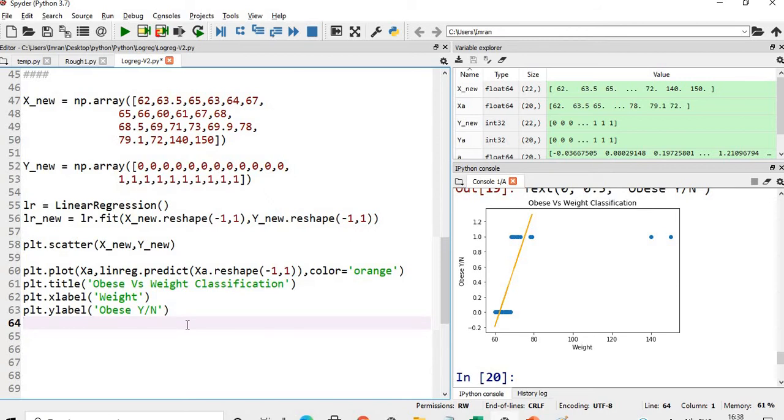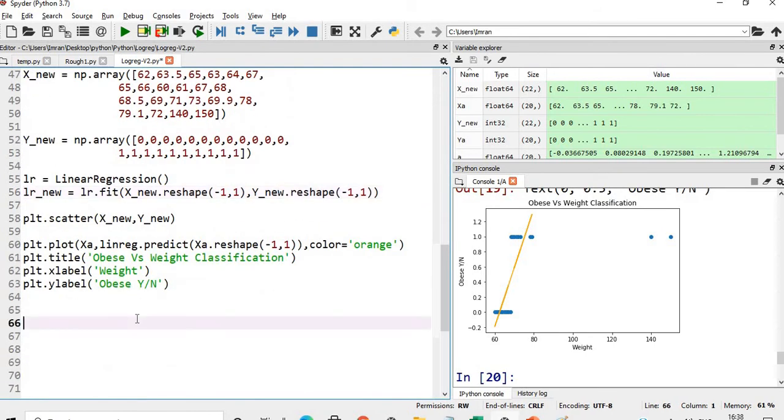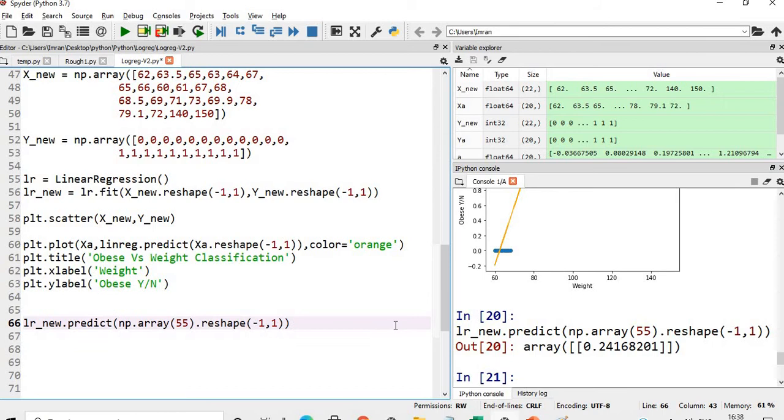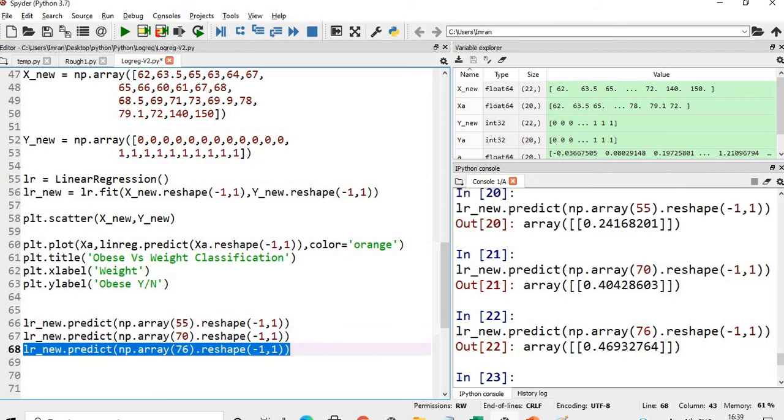You can see that the line adjusts itself. Here this line has adjusted itself due to the addition of the new outliers, this new dataset. Because of this, the coefficient and threshold value will also change. Initially the threshold value for weight was 69, but now it will definitely change.